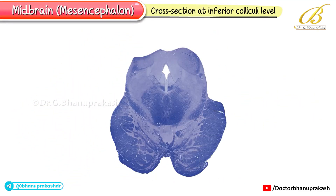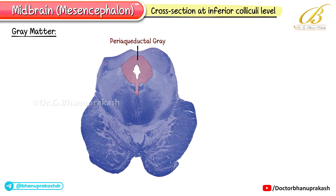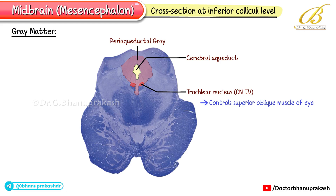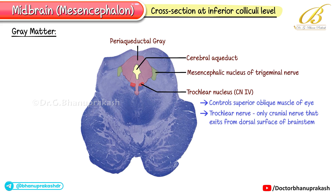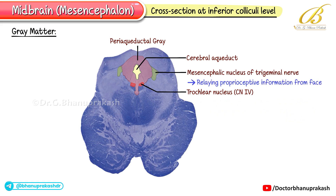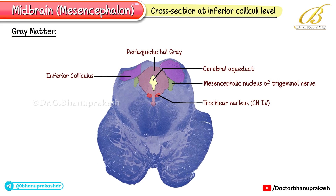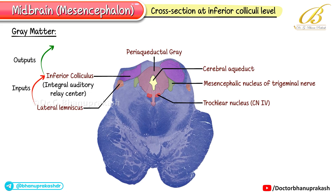Here we have a cross-section of the midbrain at the inferior colliculi level. Looking at the gray matter first: the periaqueductal gray surrounds the cerebral aqueduct and includes the trochlear nucleus (CN4), which controls the superior oblique muscle of the eye. Fascinatingly, the trochlear nerve is the only cranial nerve that exits from the dorsal surface of the brainstem. The mesencephalic nucleus of the trigeminal nerve is also found here, relaying proprioceptive information from the face. The inferior colliculus is an integral auditory relay center receiving inputs through the lateral lemniscus and sending outputs to the medial geniculate body of the thalamus via the inferior brachium.